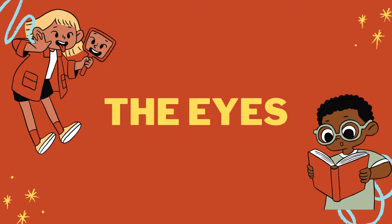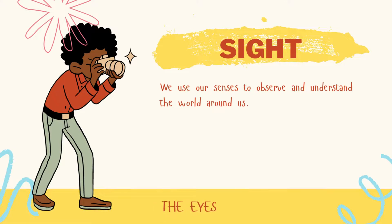The first one — the eyes. We have two eyes. And this is the sense of sight. We use these senses of sight to observe and understand the world around us. For example, you use your eyes to see things around you. You can see things in front of you, behind you, or around you.